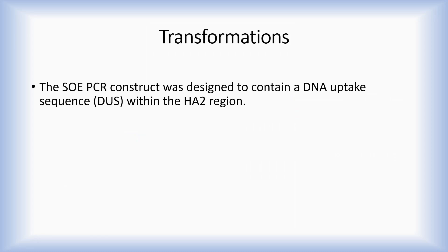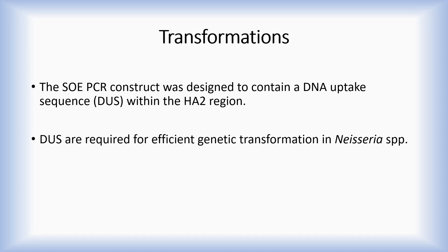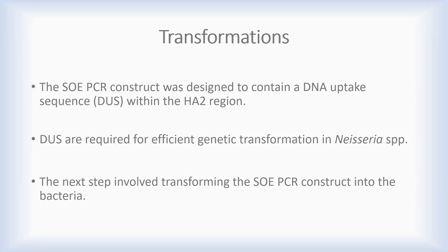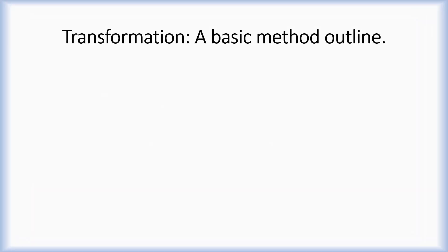Transformations: The PCR construct was designed with a DNA uptake sequence within Homology Arm 2. DNA uptake sequences are needed for efficient transformation in Neisseria species. The next step involved transforming the PCR construct into the species under investigation. The following is an outline of the method used for the transformations.